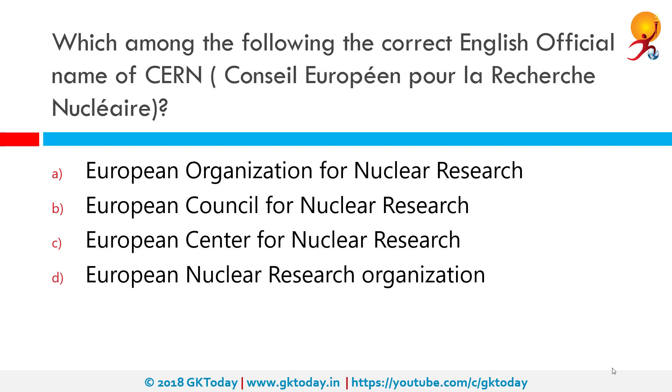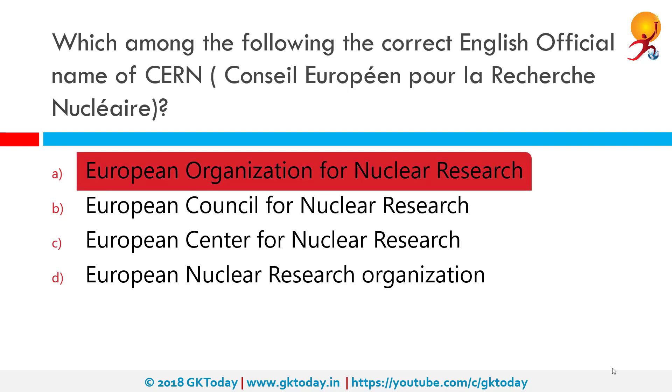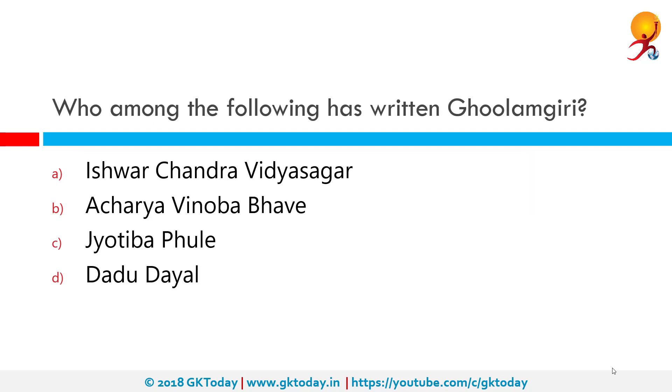Which among the following is the correct English official name for CERN? The correct answer is: European Organization for Nuclear Research.